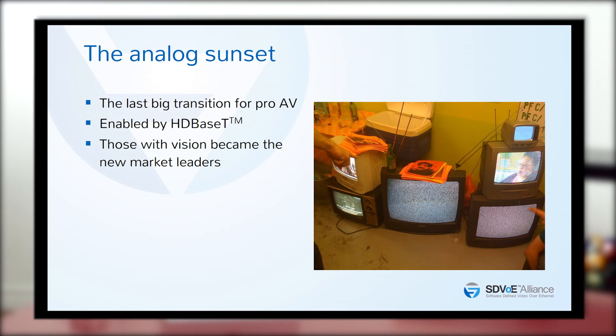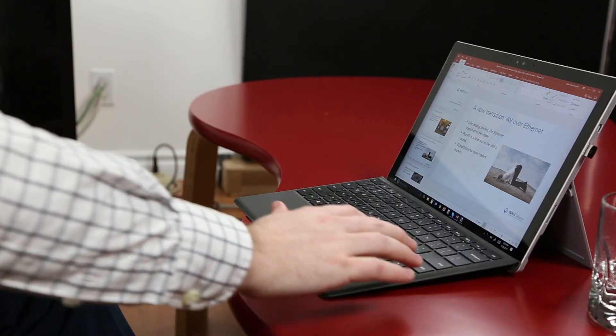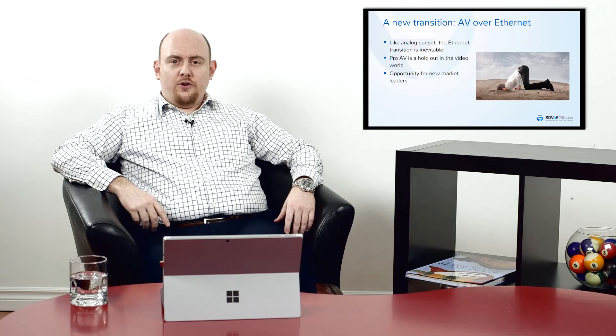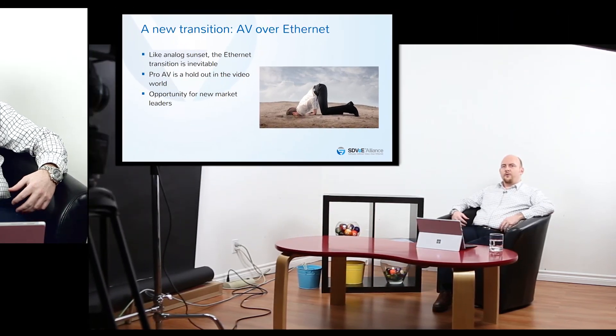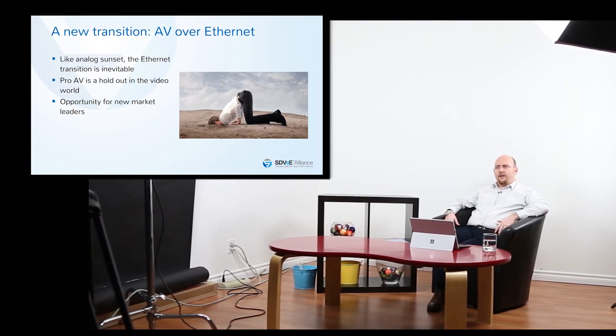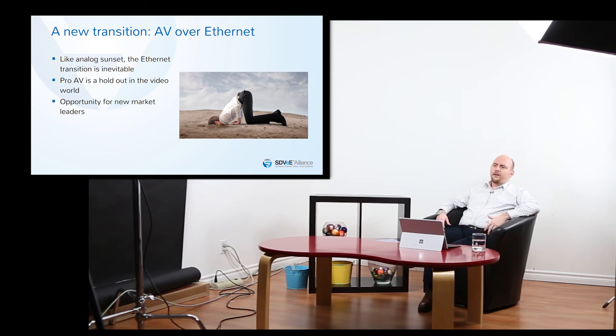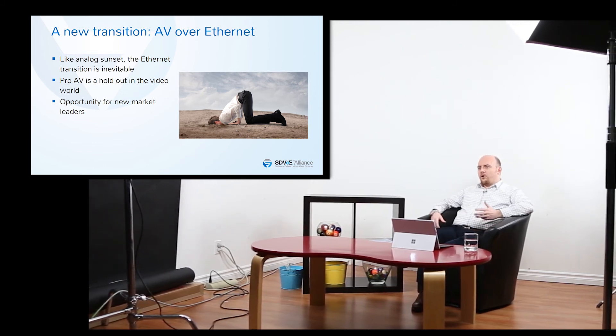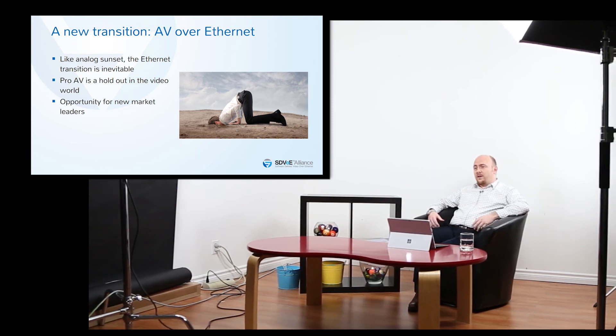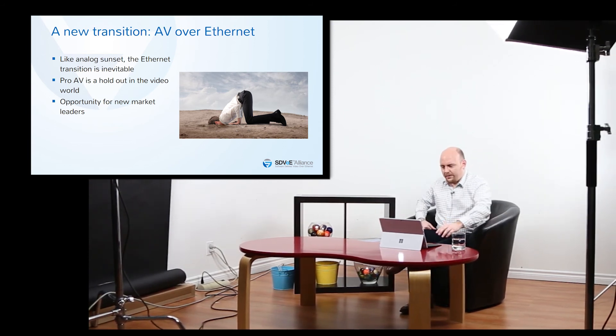The last big transition for the pro-AV industry was in 2008-2009 when we ended analog distribution. This was led by technologies like HDBaseT, and those technologies enabled those with vision to become new leaders in the signal distribution marketplace. Today our industry stands at the precipice of a new transition, a transition from the old way of circuit-based switching and matrix switches to advanced AV over IP systems. This is an opportunity for new market leaders, and in fact pro-AV has been something of a holdout in the broader community of audio and video technology.